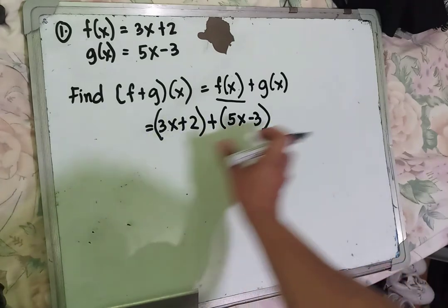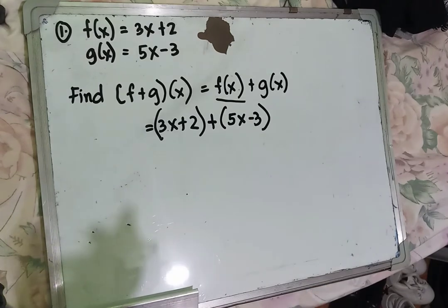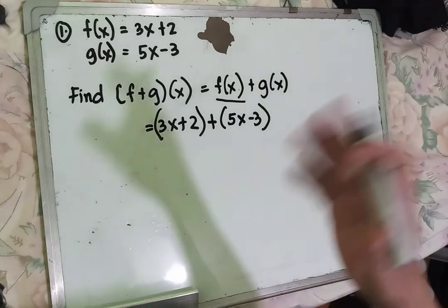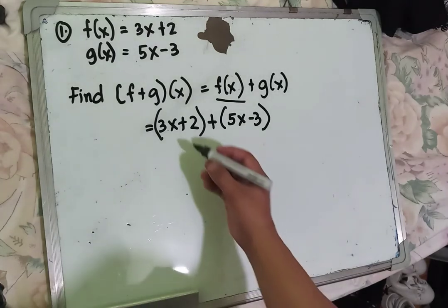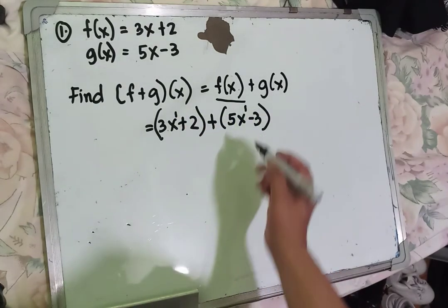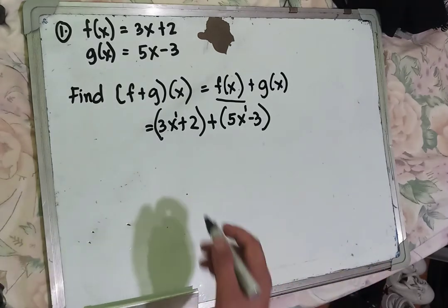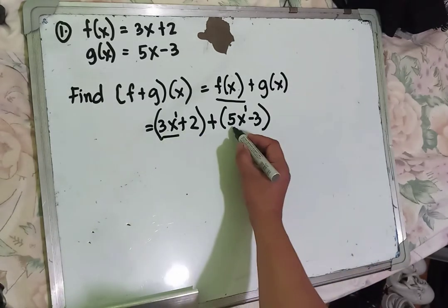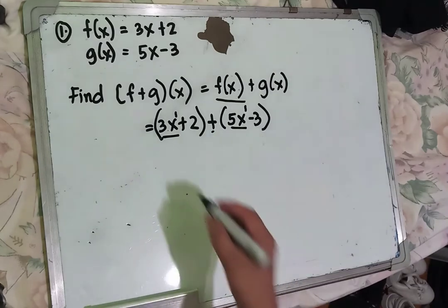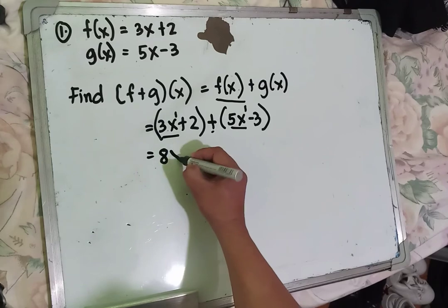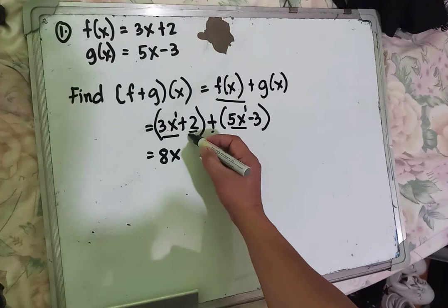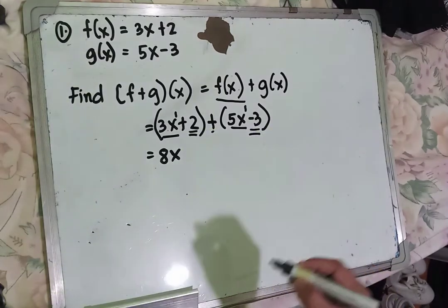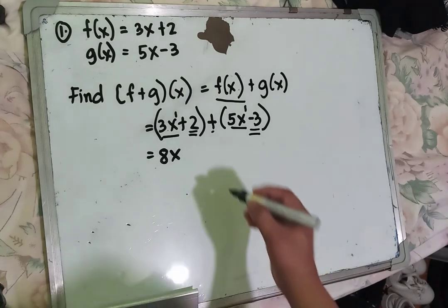To solve this equation, you need to add like terms — meaning the same variable and the same exponent. The exponent of x here is 1 and here is also 1, so they are like terms. Combine: 3x plus 5x gives 8x.